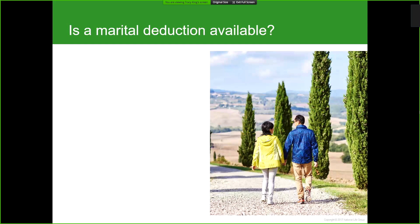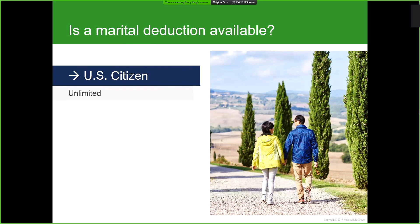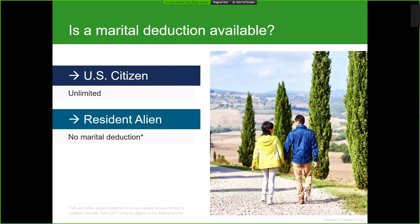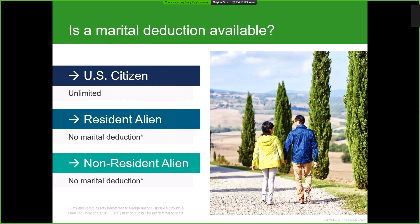In addition to the exemption, depending on the residency status of the surviving spouse, a marital deduction may also be available. If the surviving spouse is a US citizen, they receive an unlimited marital deduction — meaning no taxes are owed on assets transferred from a predeceasing spouse. However, for any foreign national, whether they're a resident alien or a non-resident alien, no marital deduction is allowed.